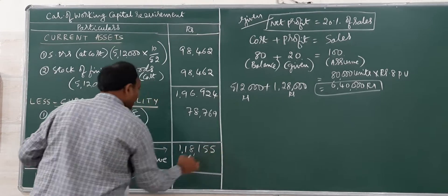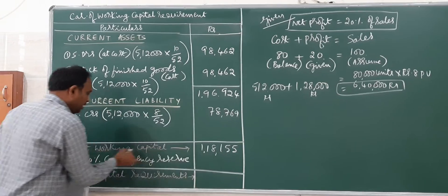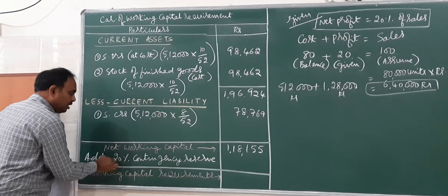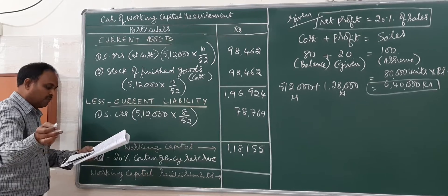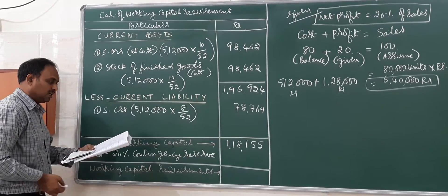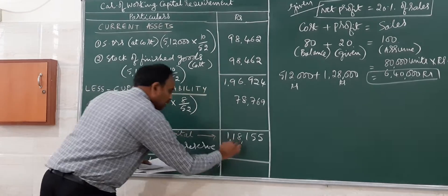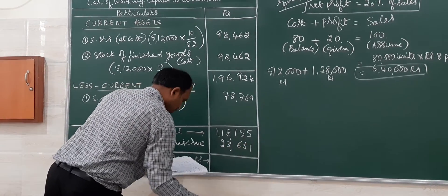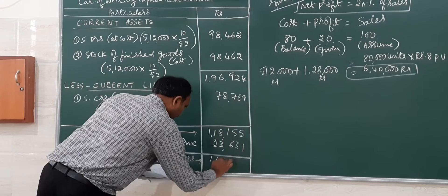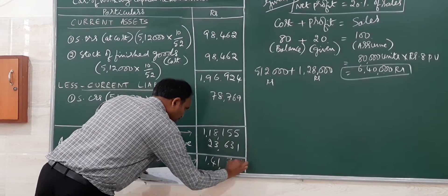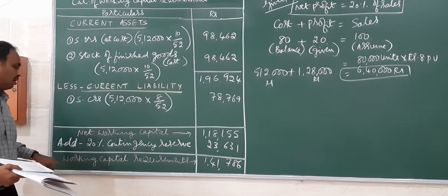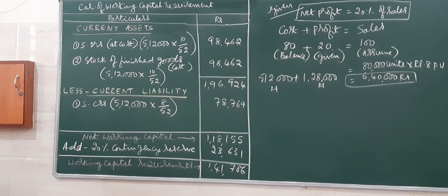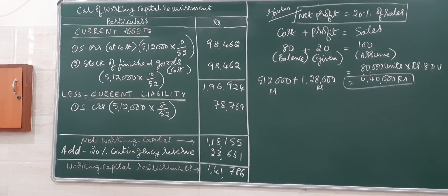Adding up total current assets minus current liabilities gives one lakh eighteen thousand one hundred fifty-five — this is the net working capital. In the last line, allow twenty percent for contingencies. Twenty percent of this comes to twenty-three thousand six hundred thirty-one.